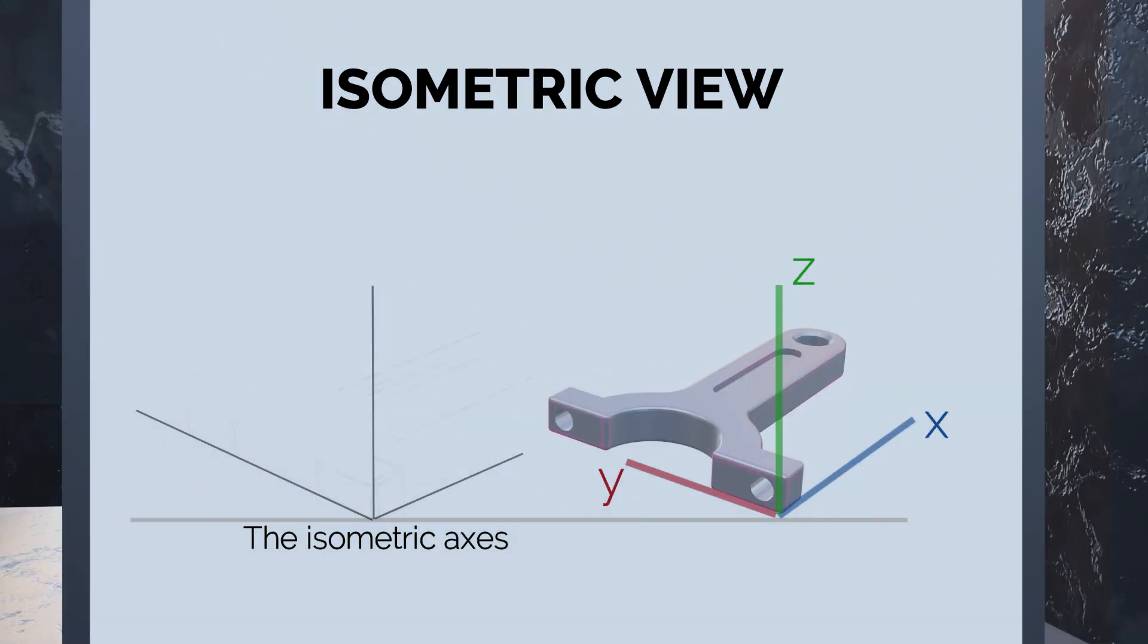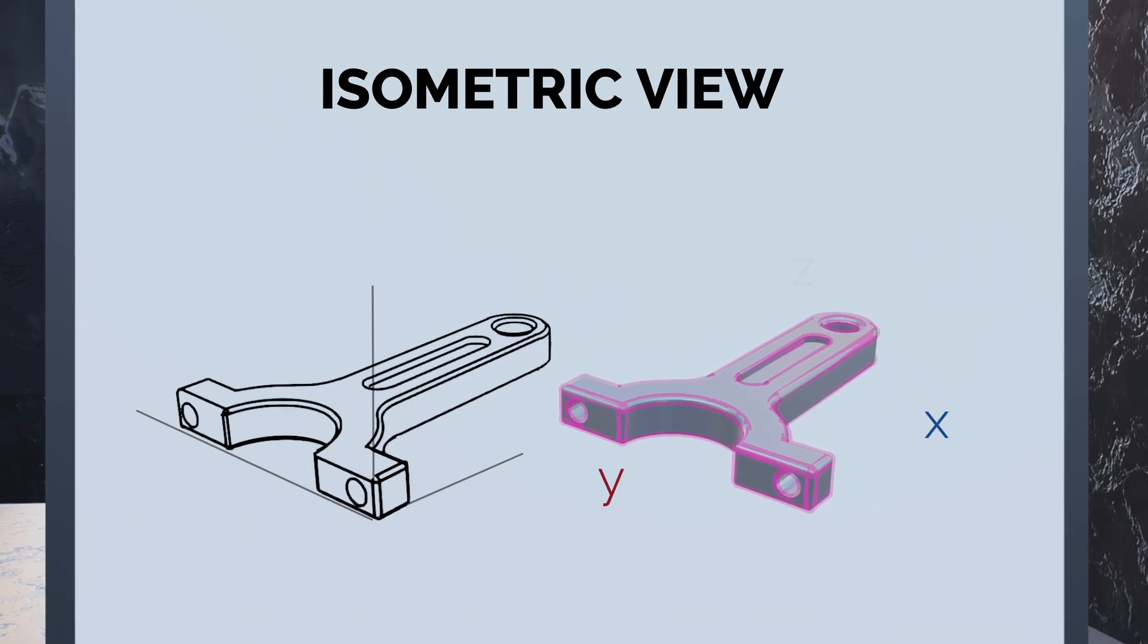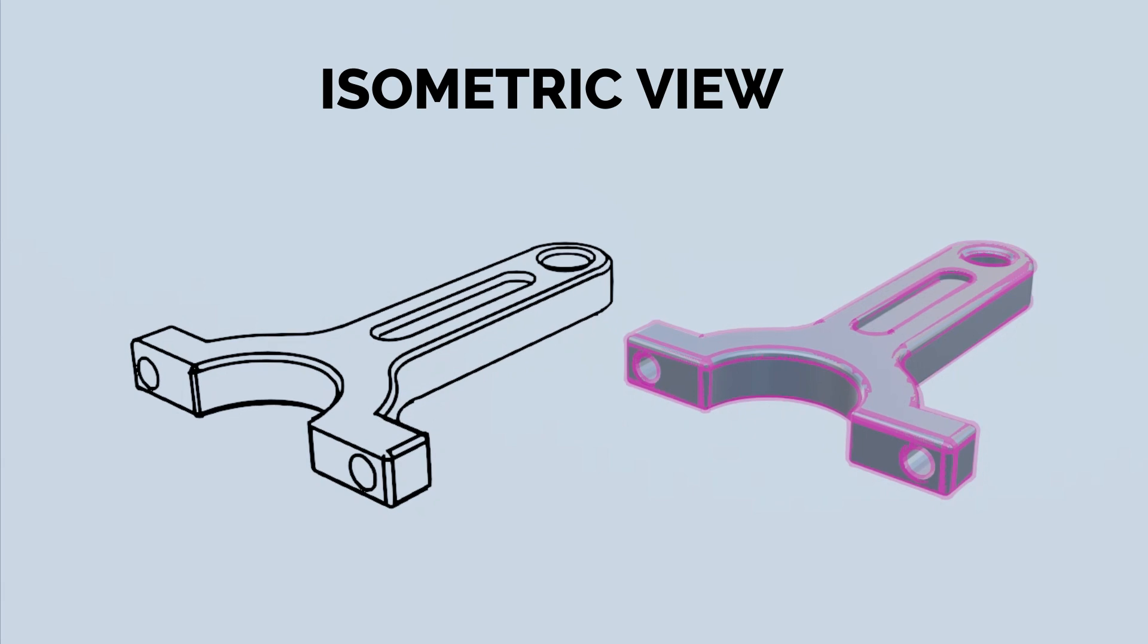The object is drawn using a series of parallel lines that follow the isometric axis. These lines are spaced at equal distances to accurately represent the object's dimensions. The resulting drawing is a three-dimensional object represented in two dimensions.